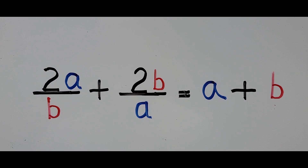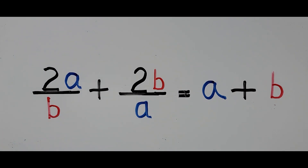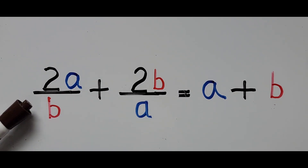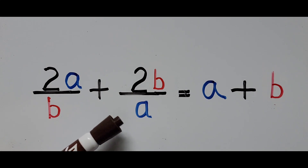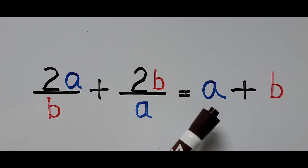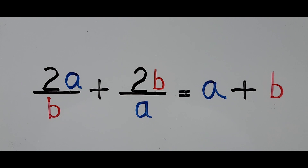Good morning everyone! Welcome to Cassiano Easy Math. Today's video is about solving this rational equation: 2a divided by b, plus 2b divided by a, equals a plus b. We will be solving for the values of a and b.